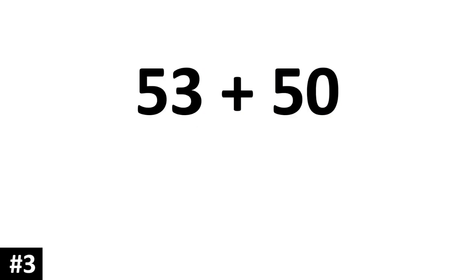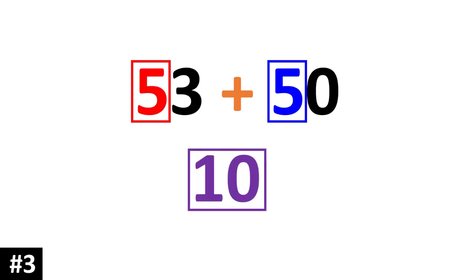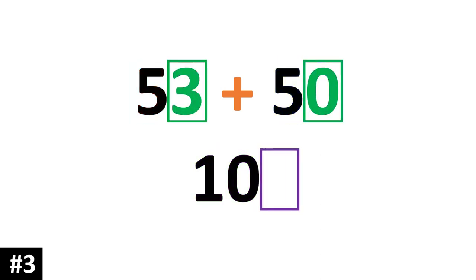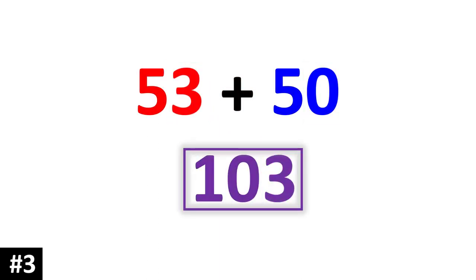How about 53 plus 50? First we just focus on the tens: 5 plus 5 gives us 10 tens. Then we look at the ones column: 3 plus 0, and we get 3. The answer is 103.